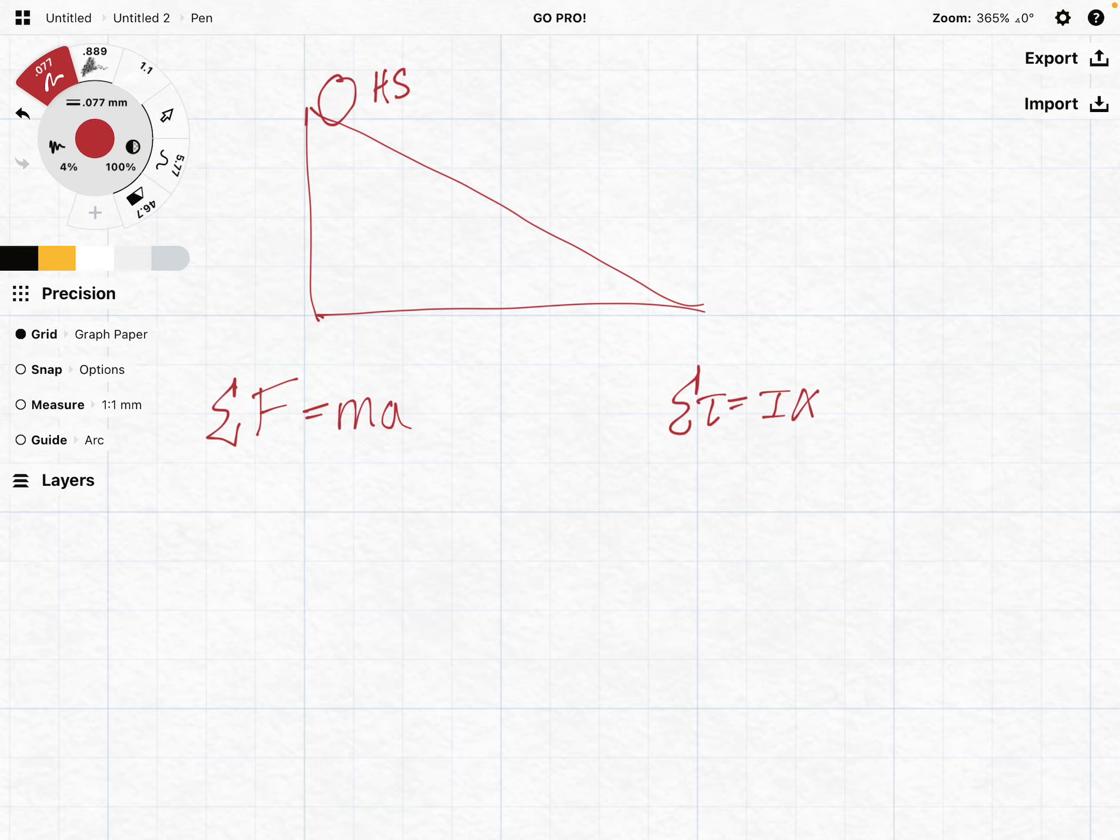The first thing we understand is sum of forces here is going to be our mg sine theta minus our force of static friction, and that will give me mass times acceleration.